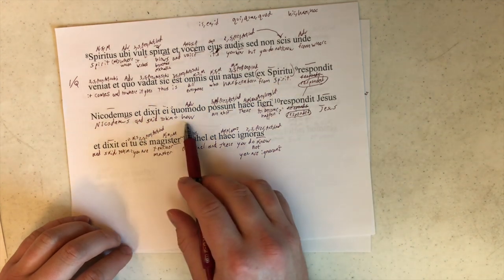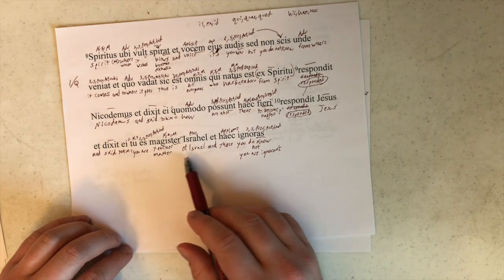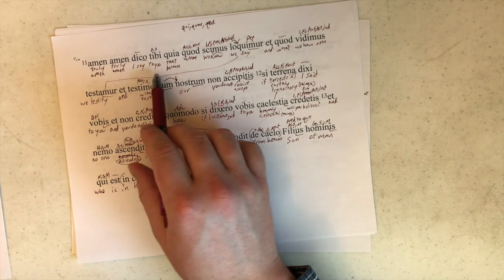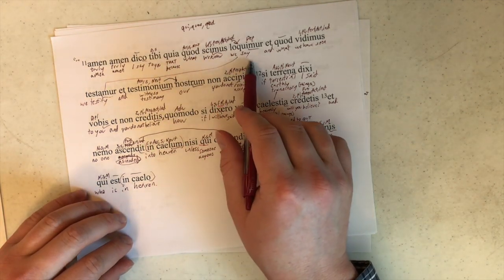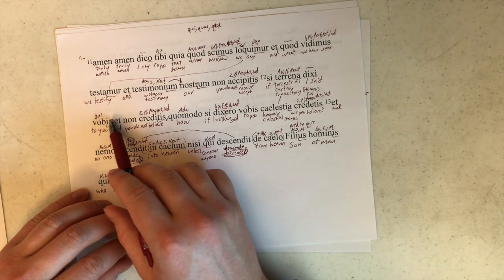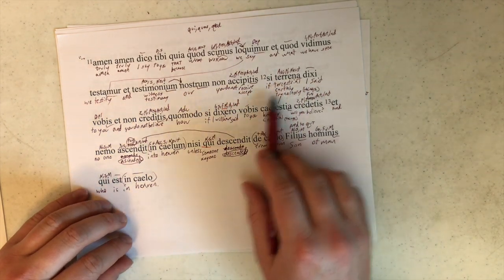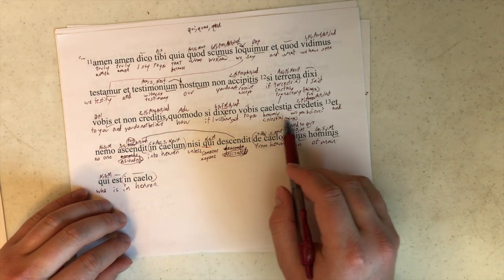Responded Nicodemus and said to him, How are these able to happen? Responded Jesus and said to him, You are master of Israel, and you do not know these? Amen, Amen, I say to you, because that what we know we say, and what we have seen we testify, and our testimony you do not receive, if I said terrestrial to you, and you do not believe. How, if I will have said to you celestial, will you believe?